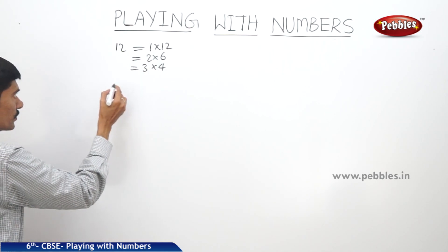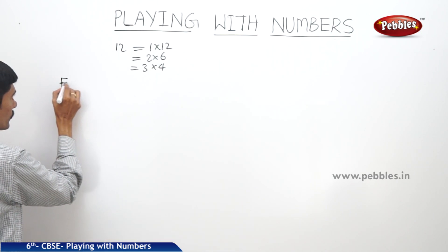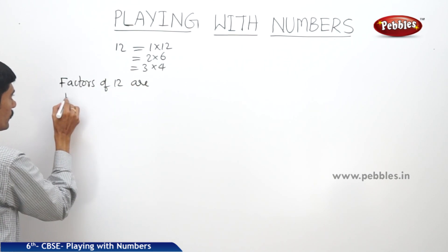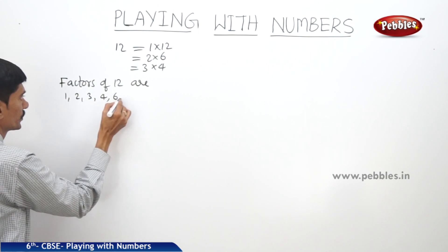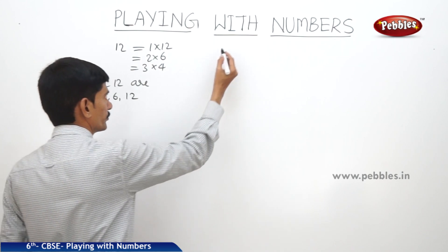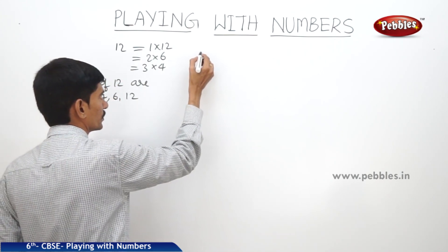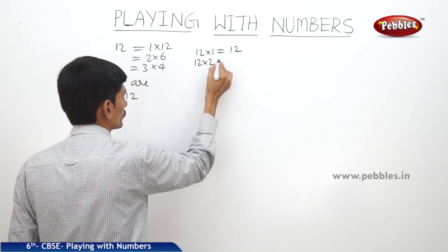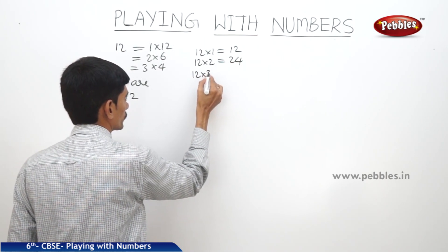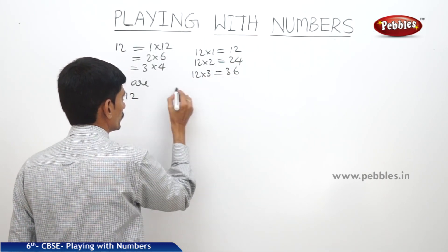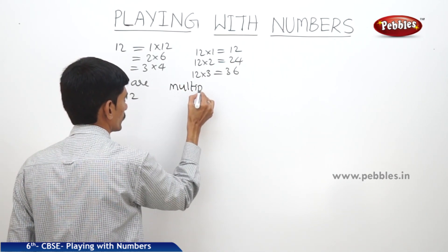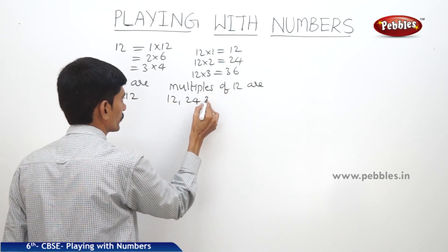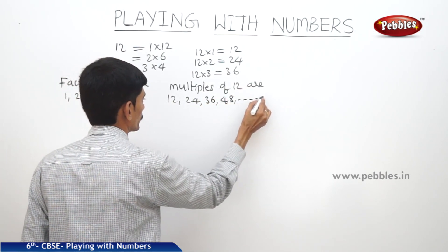So the factors of 12 are 1, 2, 3, 4, 6, and 12. And if you want to write the multiples of 12: 12 into 1 equals 12, 12 into 2 equals 24, 12 into 3 equals 36, and so on. So the multiples of 12 are 12, 24, 36, 48, and so on.